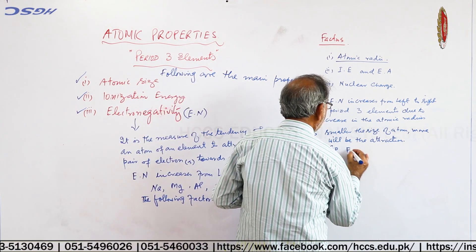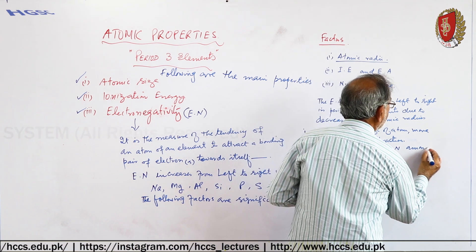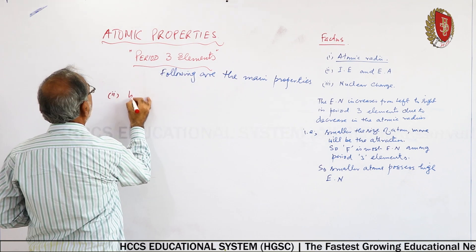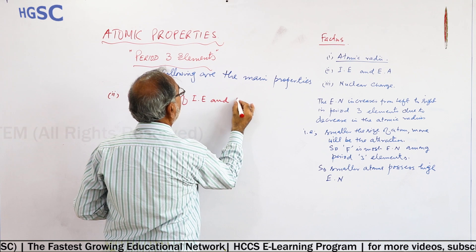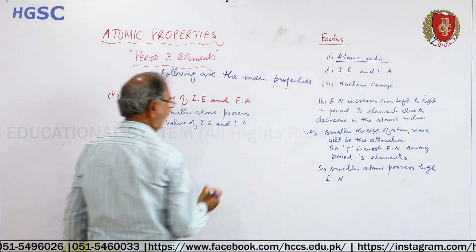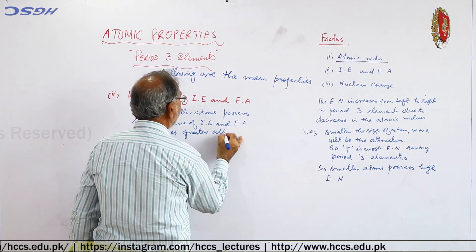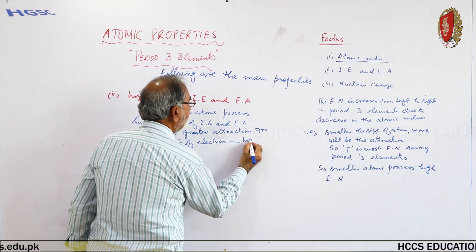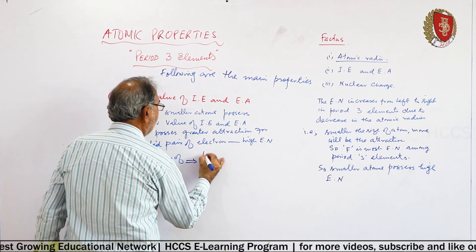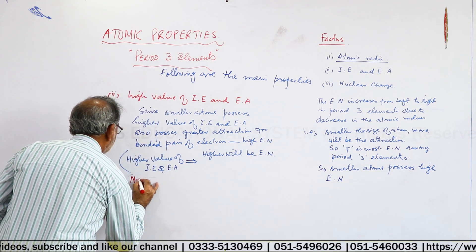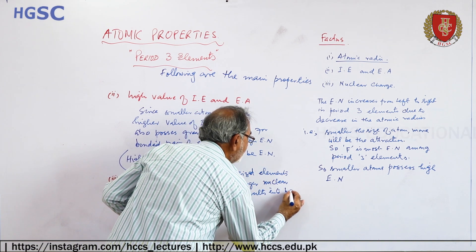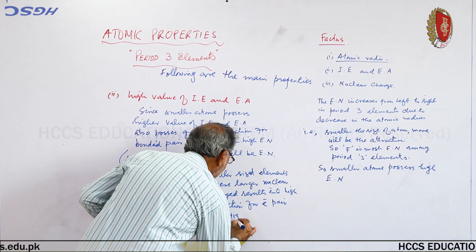Fluorine is the most electronegative element; smaller atoms possess high electronegativity. Number two: high value of ionization energy and electron affinity — since smaller atoms possess high values of ionization energy and electron affinity, they also possess greater attraction for the bonded pair of electrons, meaning high electronegativity. Higher the value of ionization energy and electron affinity, higher will be electronegativity. Number three: smaller-size atoms possess larger nuclear charge, resulting in high attraction for the electron pair and high electronegativity.